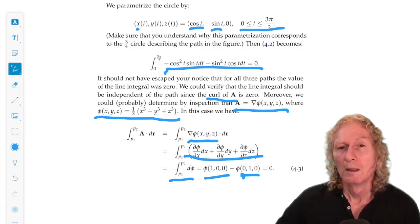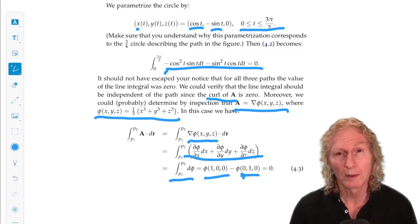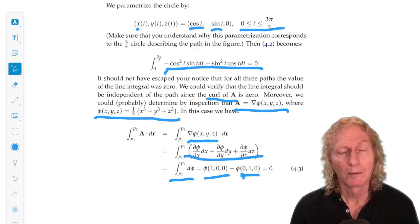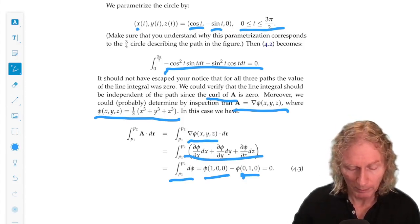So, this vector field has the property that its curl vanishes, that it's also given by the gradient of a scalar valued function. So, the line integral between any two points depends only on the endpoints. It's independent of the path that you take.